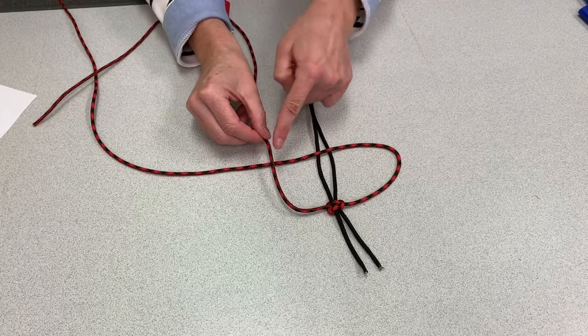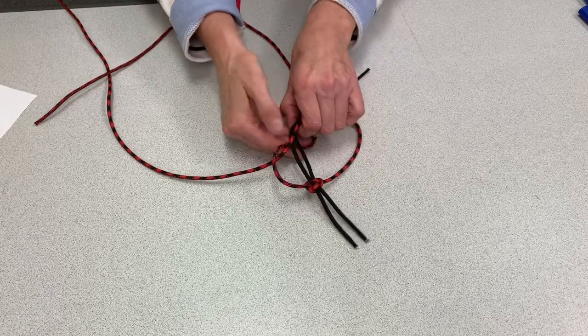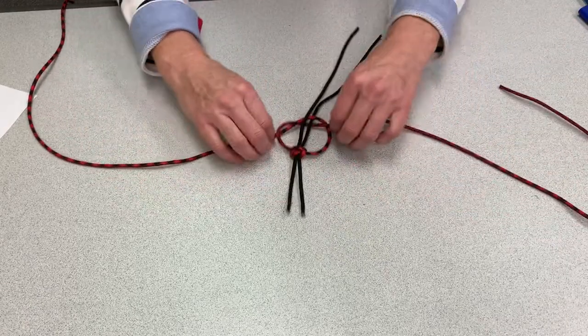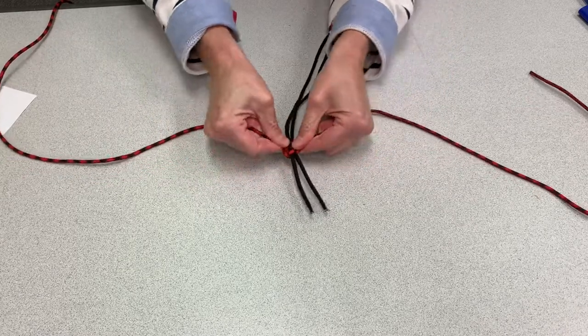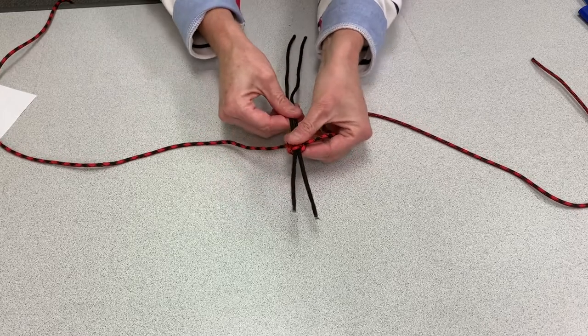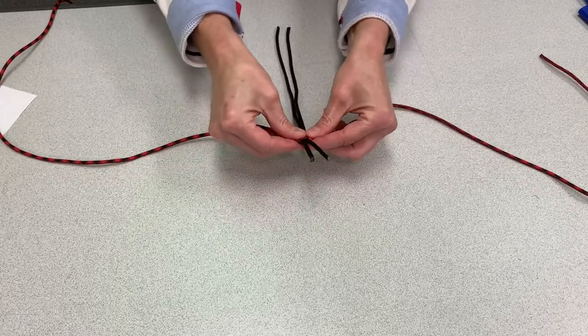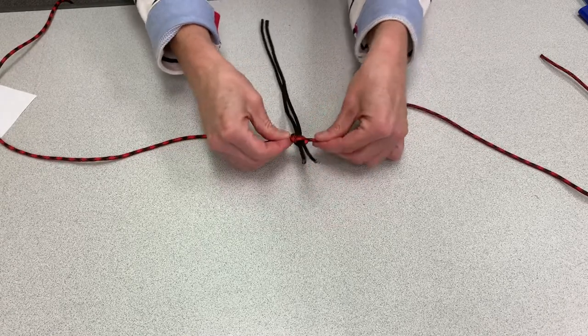Then, I'm going to take this cord and go underneath and come out this side. And you just keep repeating. And you just tighten it. And you can adjust it. And it slides a little bit. So you're not stuck. And if you make a mistake, you can unknot your last knot and continue on.